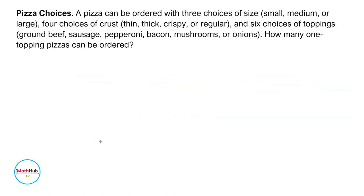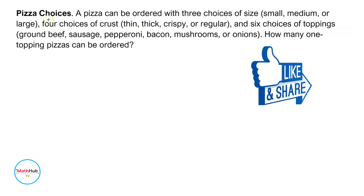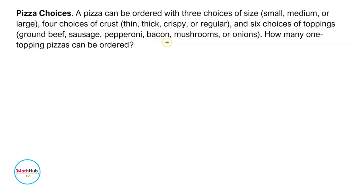Pizza choices. A pizza can be ordered with three choices of size — small, medium, or large — four choices of crust — thin, thick, crispy, or regular — and six choices of toppings: ground beef, sausage, pepperoni, bacon, mushroom, or onions.